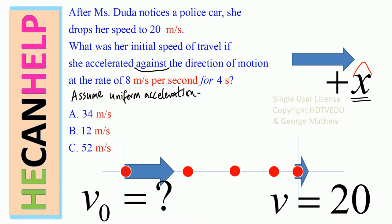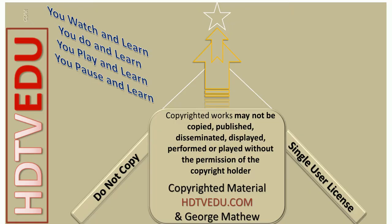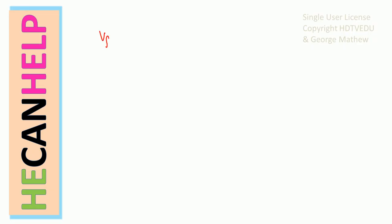We are asked for the initial velocity when the final velocity is 20. We are given the final velocity — magnitude 20, direction positive x, unit meters per second. The acceleration: magnitude 8, direction negative x, unit meters per second per second. So this is as good as negative 8 meters per second per second.